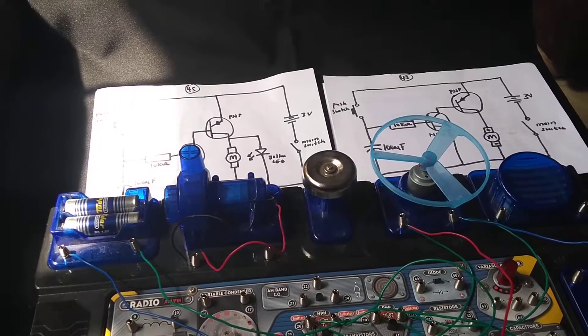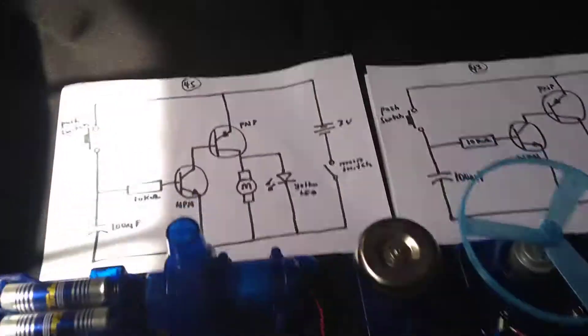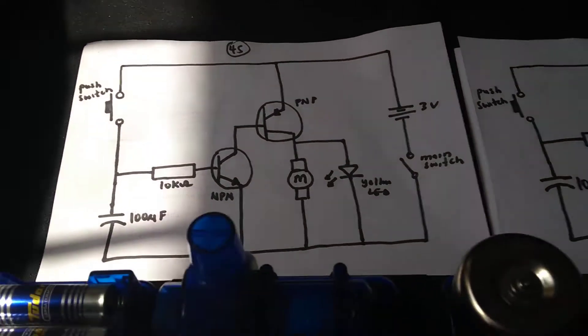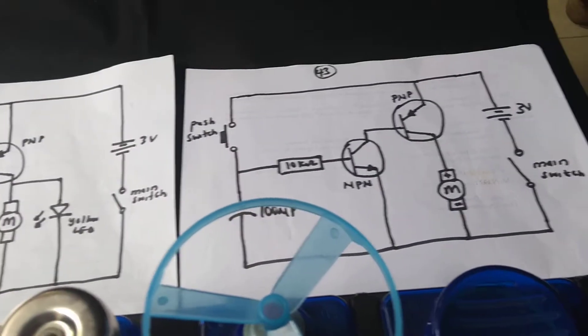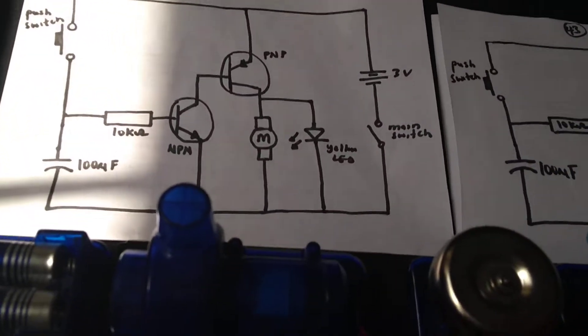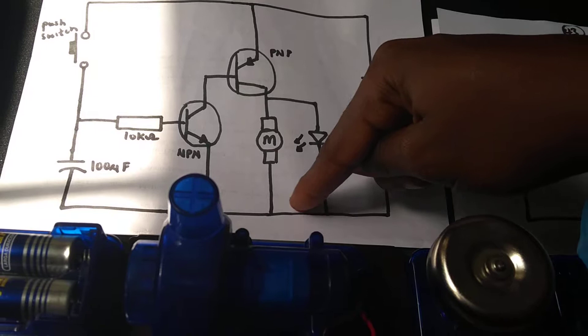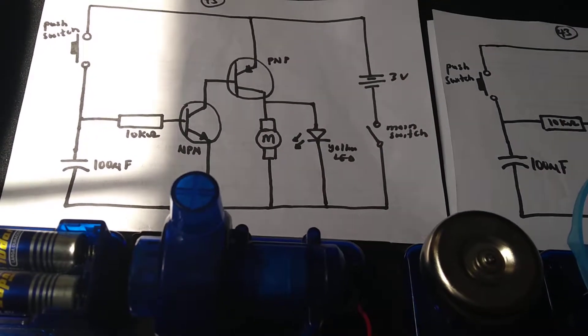This is the delay fan and LED experiment. Here is the circuit diagram, the same as experiment 43. It's just that a yellow LED is connected across the motor.